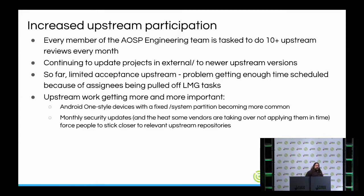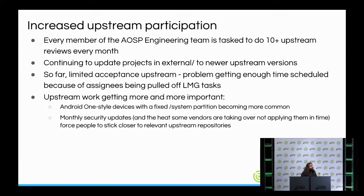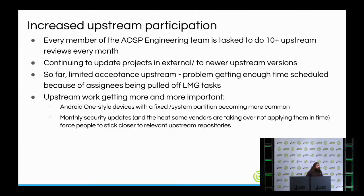Another key goal between the last Connect and this one was increasing upstream participation. Every member of the AOSP engineering team repeatedly gets the task to do at least 10 upstream reviews every month. We are continuing to update projects in the external tree to new upstream versions, since those don't seem to be actively maintained in AOSP upstream. We didn't have enough resources to ensure everyone did those 10 reviews because some assignees were pulled off to other tasks.